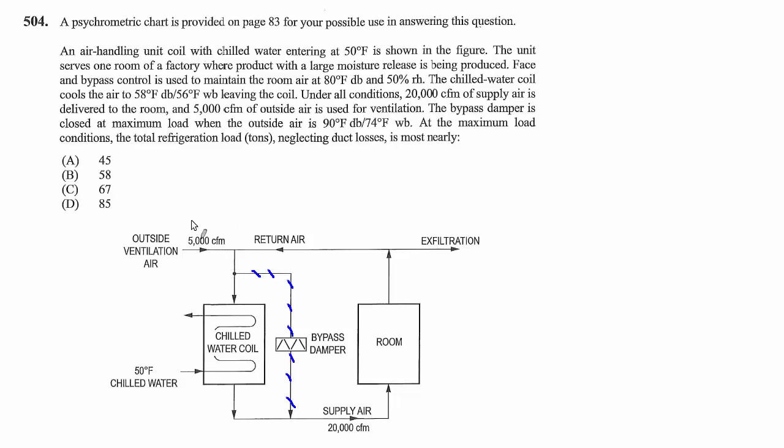The exhaust and outside air stuff does need to be taken into consideration. Let's put some of the numbers they gave us onto this diagram. The stuff that's coming back from the room—the return air—we know it has a temperature of 80°F and a relative humidity of 50%. We also know 5,000 CFM of outside air is being introduced, so of the 20,000 that was supplied, 5,000 had to have been exhausted in order to allow for that outside air to be introduced. So this return air volume is only 15,000 CFM.